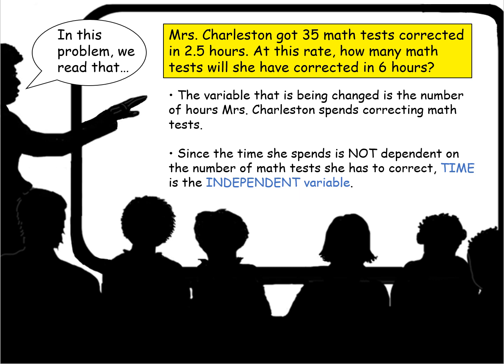As she spends more and more time correcting math papers, she gets more of them corrected. At two and a half hours, 35 math tests corrected — that means she's correcting about 14 per hour. We could graph this and we would see that in six hours, she would have 14 times 6 math tests corrected. That would be 84 math tests — that's a lot of papers to correct.